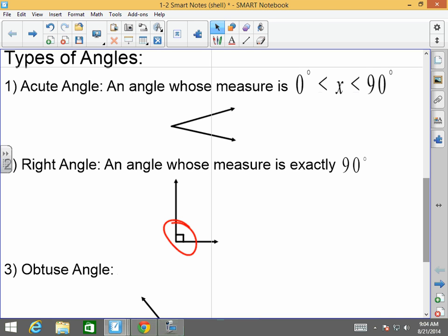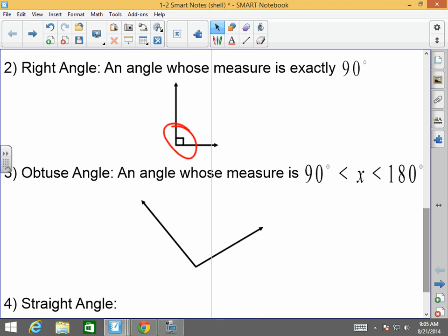An obtuse angle. An obtuse angle is like the angle we first drew, the one that was 131 degrees. An obtuse angle has a measure that is greater than 90 but less than 180. It's not equal to 90 because that would be a right angle. It's not equal to 180 because that would be what's called a straight angle.